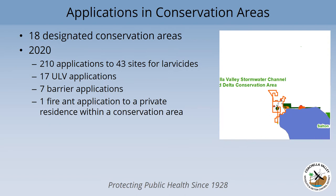One thing that we do add on top of what we were already doing is looking at the conservation areas. There are 18 different designated conservation areas across the valley. Every year there's a review of the applications made particularly in those areas to call out what happened in any of those conservation areas specifically. In 2020, we made 210 applications of larvicides to 43 sites within one of those conservation areas. We also had 17 ULV applications and seven barrier applications. In addition, there is a conservation area that has a private residence within it, and we did make an application for fire ant control within that area.